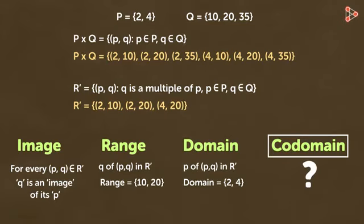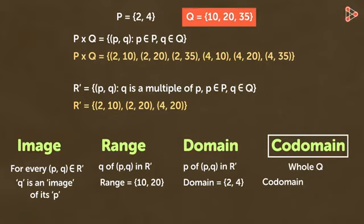What is the co-domain here? The whole set Q is called the co-domain of relation R. So the co-domain here will contain the elements 10, 20 and 35. Easy wasn't it?